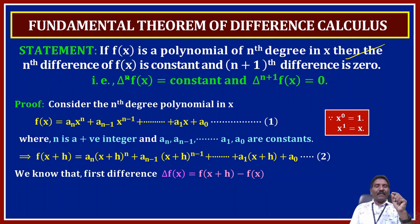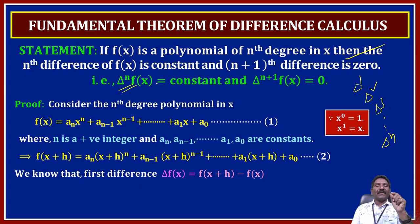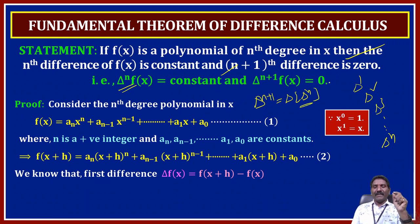That is, del power n of f of x is constant — here del power 1 is the first difference, del squared is the second difference, del cubed is the third difference, and so on, del power n is the nth difference. And the (n+1)th difference, del power n plus 1, equals del of del power n — the difference of the nth difference — so del power (n+1) of f of x is 0. This is a very, very important theorem.